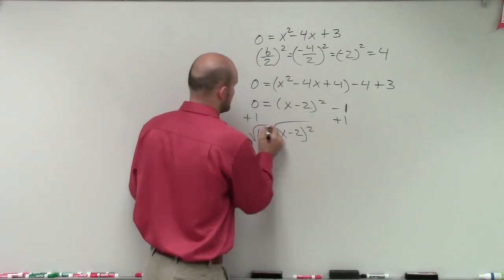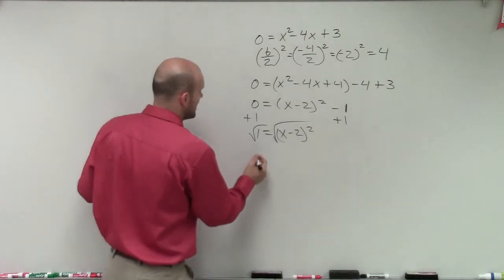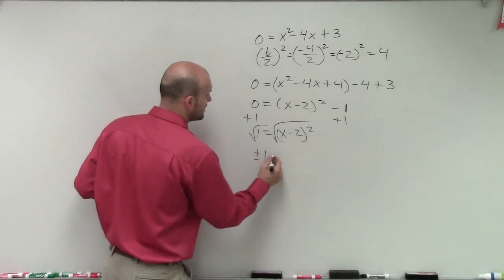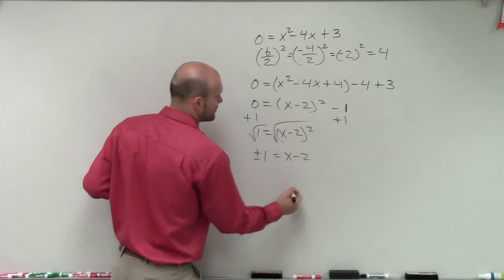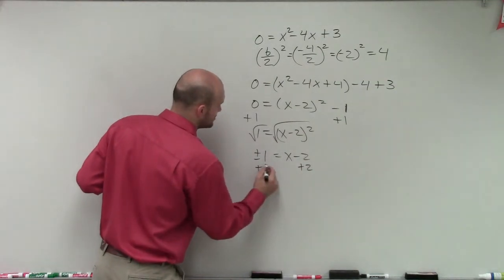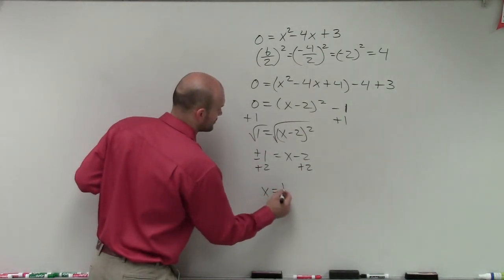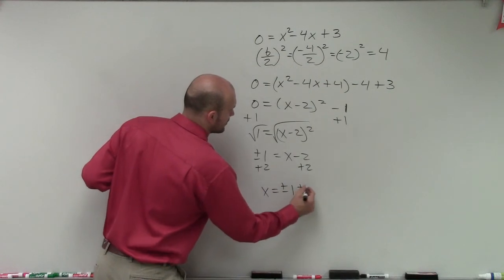Then I take the square root. Remember when taking square roots, I get plus or minus 1 equals x minus 2. Then I add 2 to both sides, so x equals plus or minus 1 plus 2.